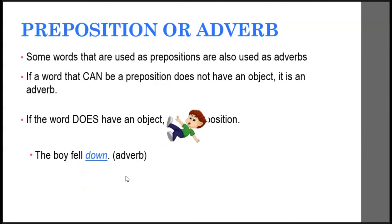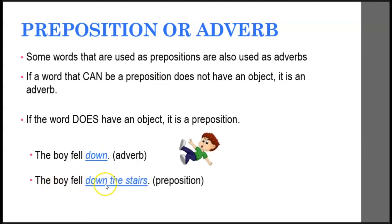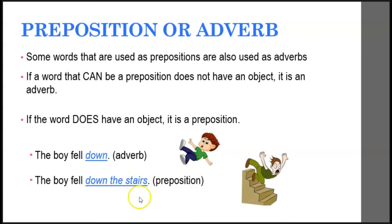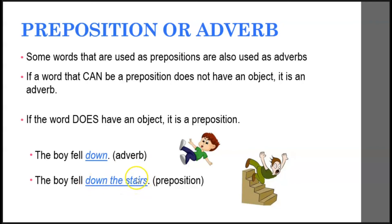On the other hand, 'the boy fell down the stairs.' In this case, I can answer 'down what?' — the answer is 'stairs.' Down has an object here, so it is a preposition with a prepositional phrase.